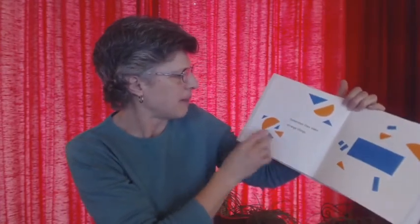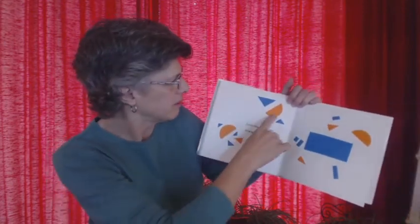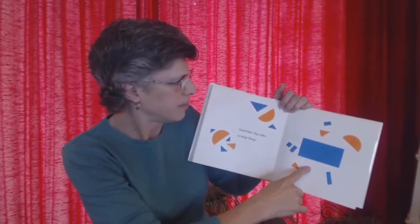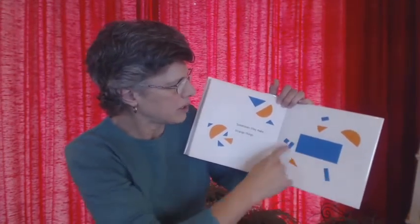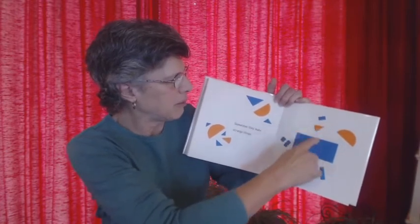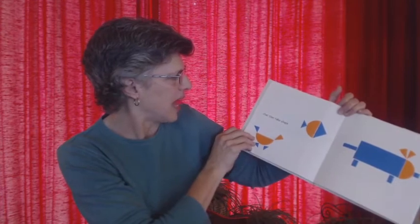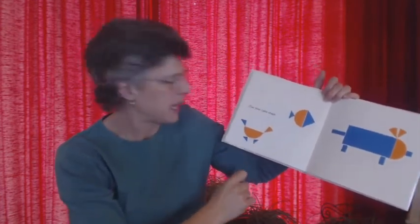Sometimes they make strange things. Look at all the shapes they're making. Maybe a horse. I see maybe a horse or an animal, and someone riding. Maybe. That then takes shape. Look.